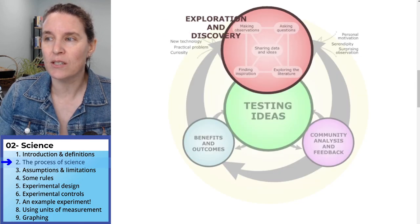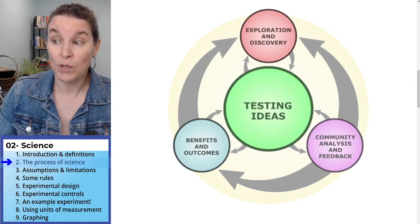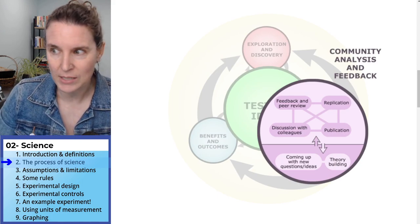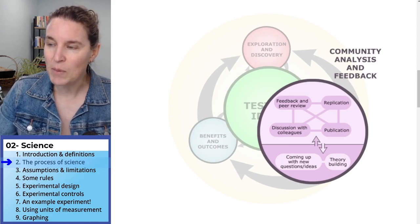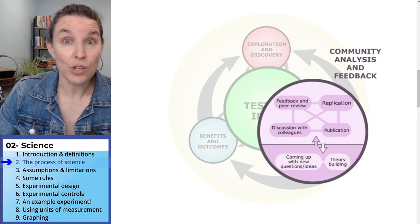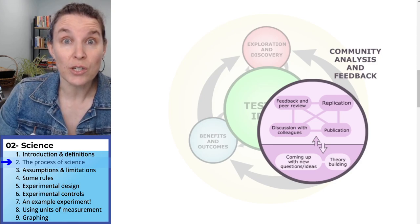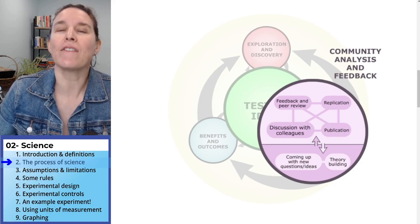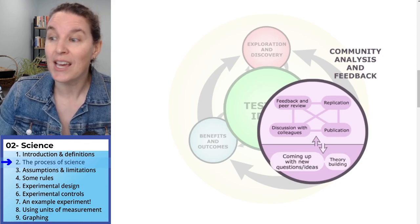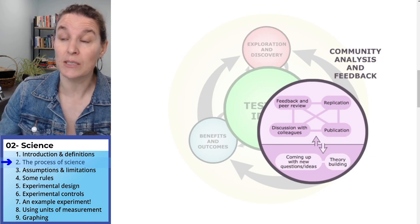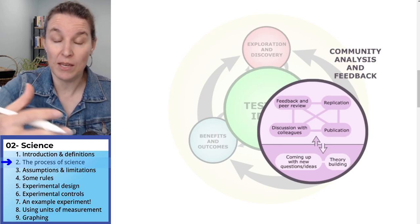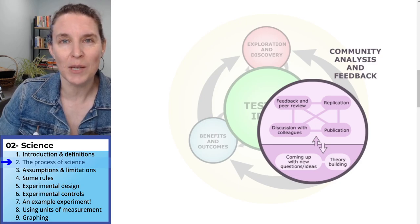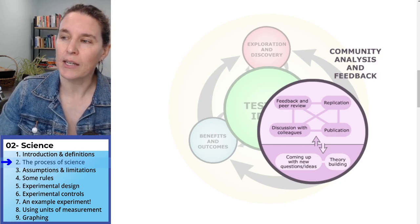You can actually click on each one of these various categories and it'll take you to more information. I love how it illustrates there's nothing linear about this. Each colored bubble — 'community analysis and feedback' — what an important part of the process of science. This feedback and review, having your research findings replicated, having conversations with colleagues, new ideas and theory building based on information from other people — this is all very dynamic and creative and not linear.